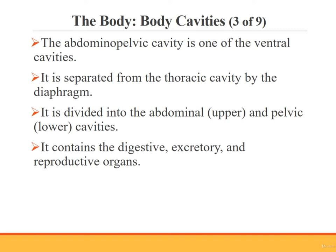The second of the ventral cavities is the abdominopelvic cavity. It is separated from the thoracic cavity by the diaphragm, a muscle used for breathing. Within the abdominopelvic cavity, the superior or upper portion is the abdominal cavity, and the inferior or lower portion is the pelvic cavity. These cavities contain the digestive, excretory, and reproductive organs.